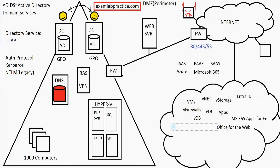Then we have Exchange Online — the admin side is Platform as a Service, but the user side is Software as a Service. We've also got SharePoint Online, which follows the same idea: admin side is Platform as a Service, and the user side, which most people focus on, is Software as a Service.